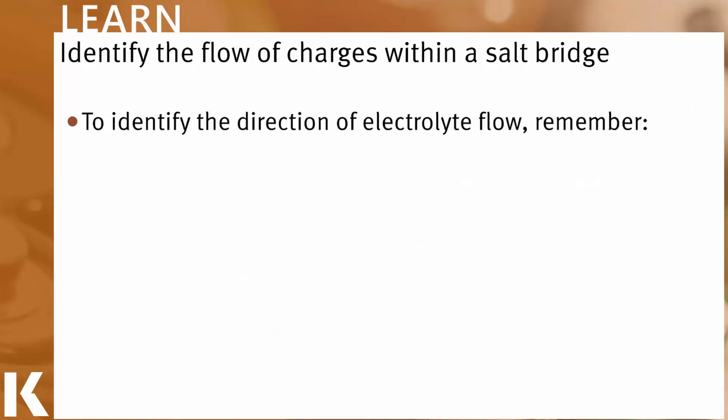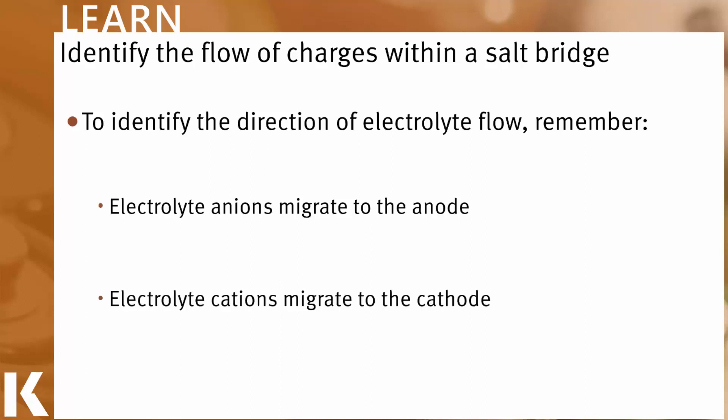All right, so let's take a look at how we can do this. Remember, the key things to know are that electrolyte anions migrate to the anode. That's a good mnemonic. Anions, negatively charged species, will migrate towards the anode. And cations, positively charged species, will migrate towards the cathode.